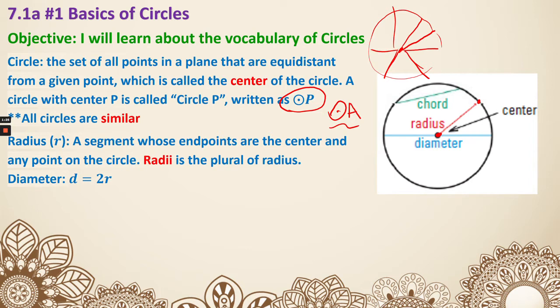Diameter - we use the letter D to represent it, and diameter is basically twice the radius. So D equals 2R.